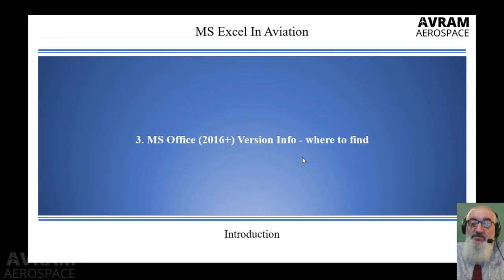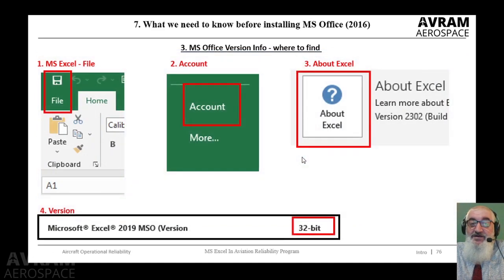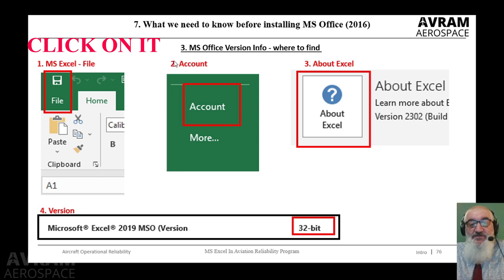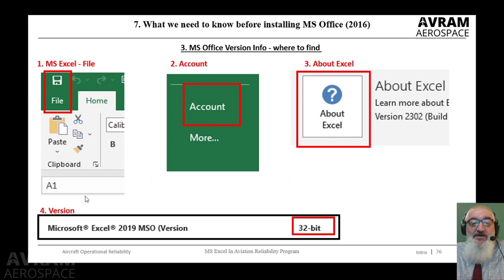Now suppose we already installed our MS Excel — where can we find information about the version? The answer is very simple: open your MS Excel file, go to the top-left corner and click the File icon, then we will see a list of items. Click on 'Account,' then we will see 'About Excel' — click on it. Here is the MS Excel version information: Microsoft Excel 2019.